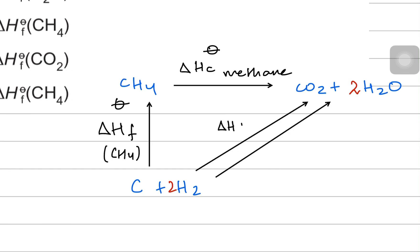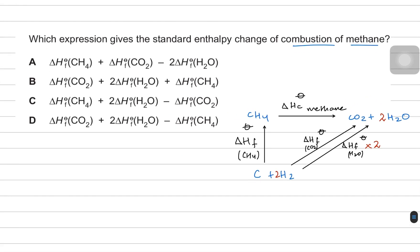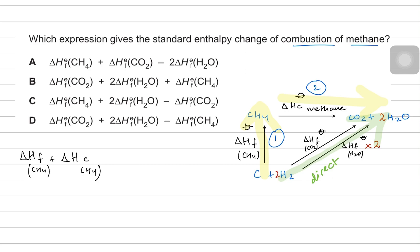That path gives you standard enthalpy of formation for carbon dioxide and standard enthalpy of formation for water — don't forget to put a coefficient of 2 around water because you are using double moles of hydrogen to make double moles of water. Making methane and then combusting it is the indirect method, while making carbon dioxide and water directly is the direct method.